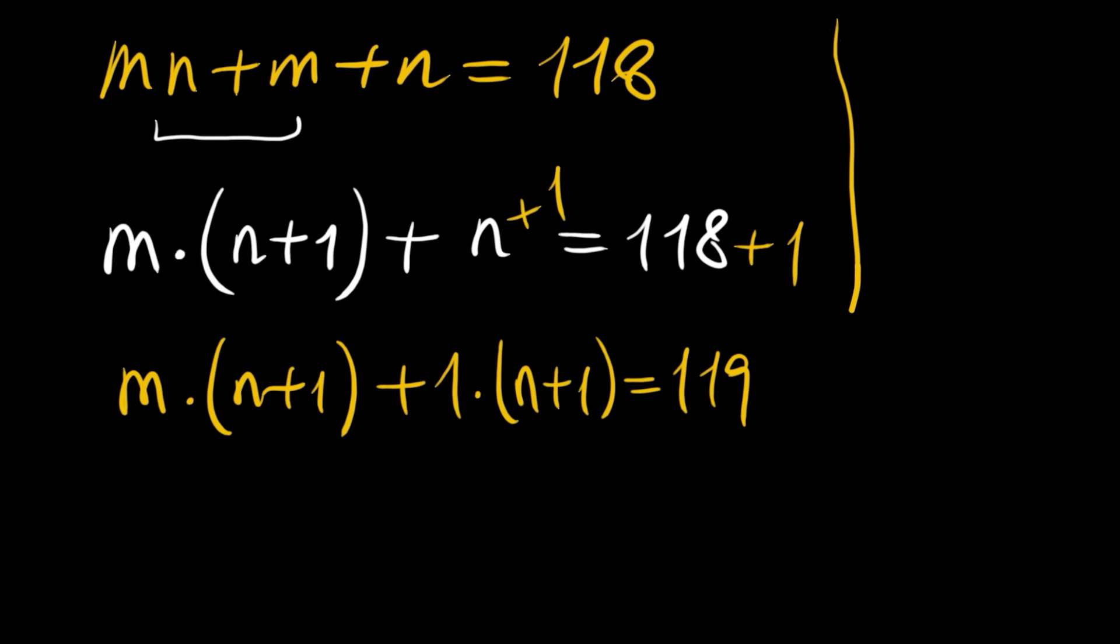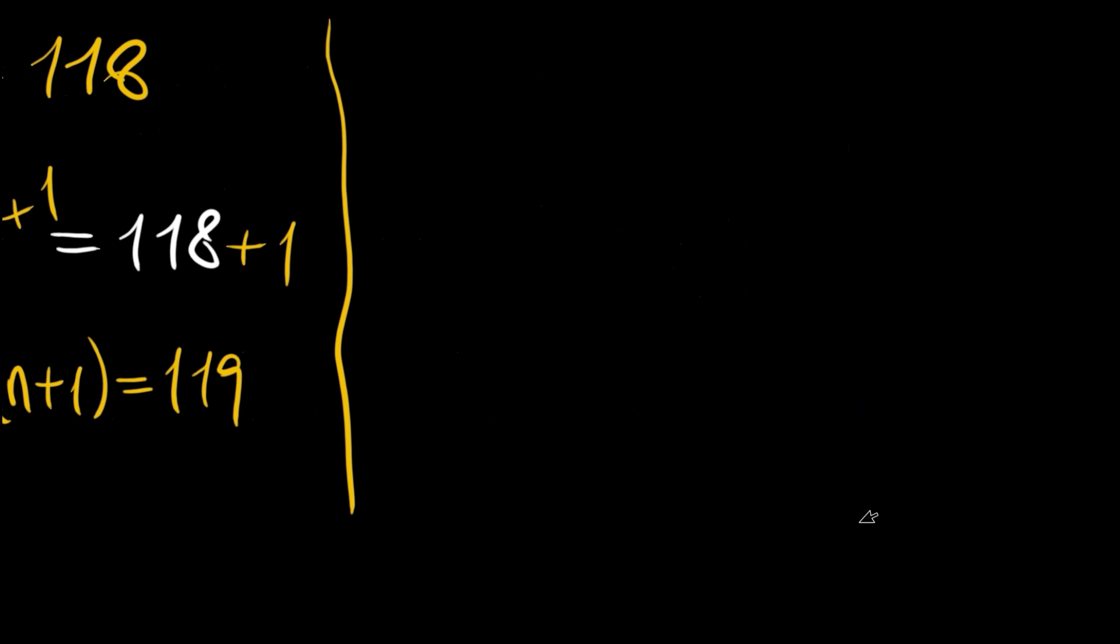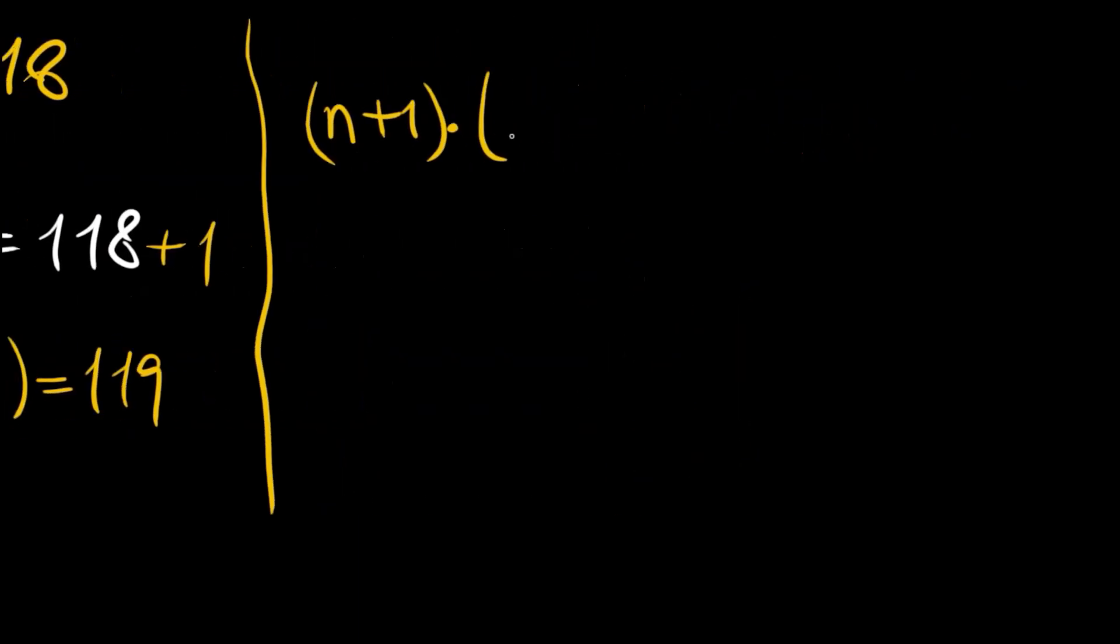Now then we can again factor out a factor, now n plus 1 is our factor: (n plus 1) times (m plus 1). This is equal to 119.